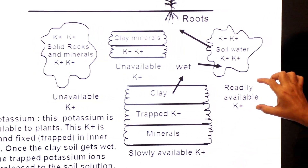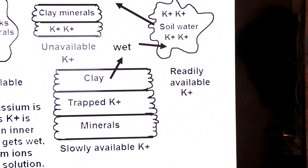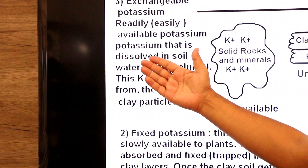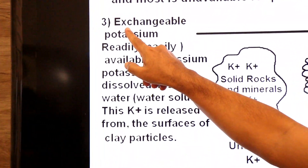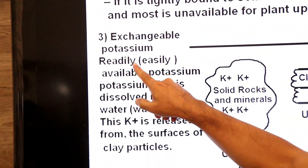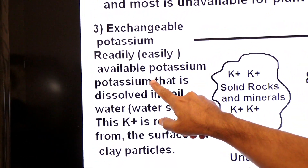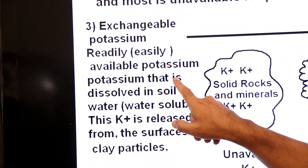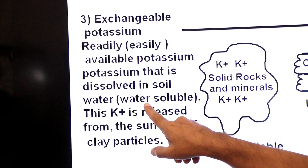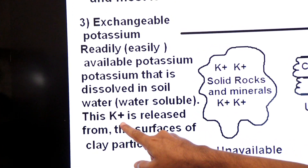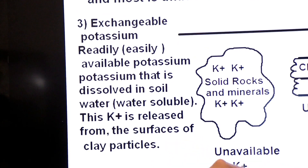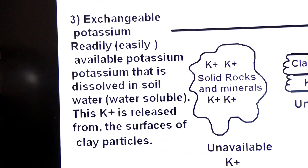Now we come to the third form: readily available potassium. This is also called exchangeable potassium. 'Readily' means easily. This potassium is dissolved in soil water and is released from the surface of clay particles. Because it is on the surface of clay, it is easily and readily accessible to plant roots.